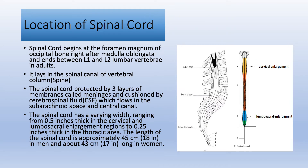The spinal cord begins at the foramen magnum of the occipital bone, right after the medulla oblongata, and ends between L1 and L2 lumbar vertebrae in adults. In newborns and young children, this level extends to L3. The spinal cord is found in the spinal canal of the vertebral column, also called the spine. It is protected by three layers of membranes called meninges and cushioned by cerebrospinal fluid, which flows in the subarachnoid space and central canal.